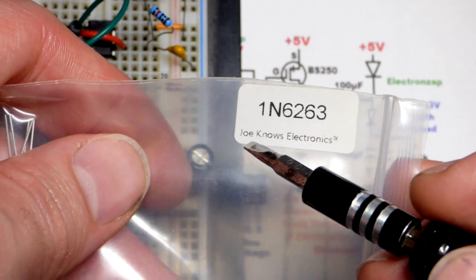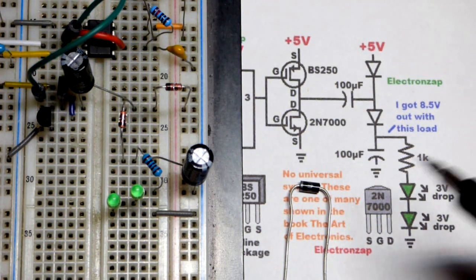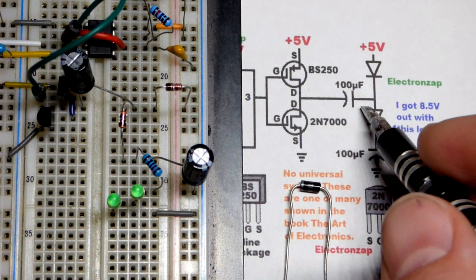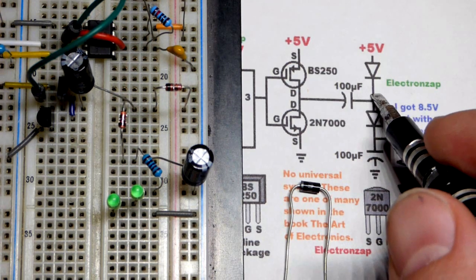But this is the 1N6263, which I got from the Joe Knows Electronics Semiconductor Kit. I highly recommend that kit once you have the basic components. There's a lot of semiconductor components that you can experiment with.